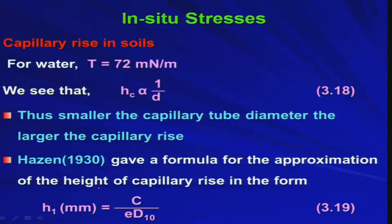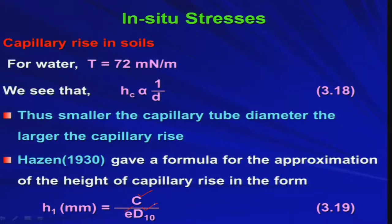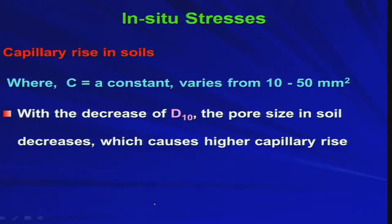Hazen in 1930 gave a formula for approximating the height of capillary rise: h_1 (in millimeters) = C / (e · D10), where e is the void ratio and D10 is the effective size. The constant C varies from 10 to 50 mm². If you know the void ratio and D10 from the gradation curve, you can find the capillary rise from this equation.